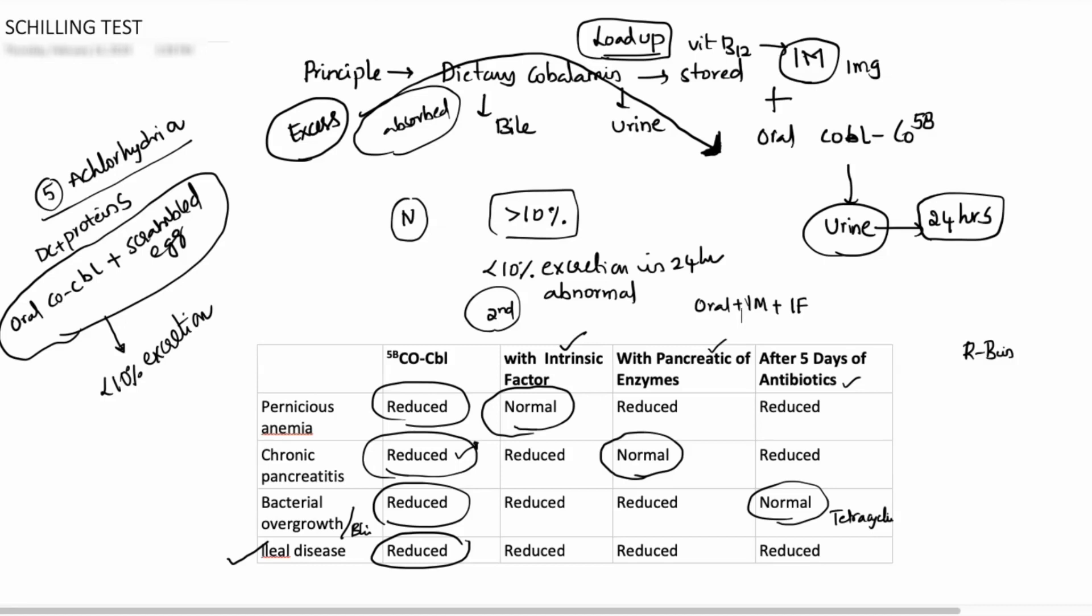So let me sum up. The Schilling test is done mainly to identify or to differentiate different causes of vitamin B12 deficiency, that too exclusively concerned with absorption of vitamin B12.